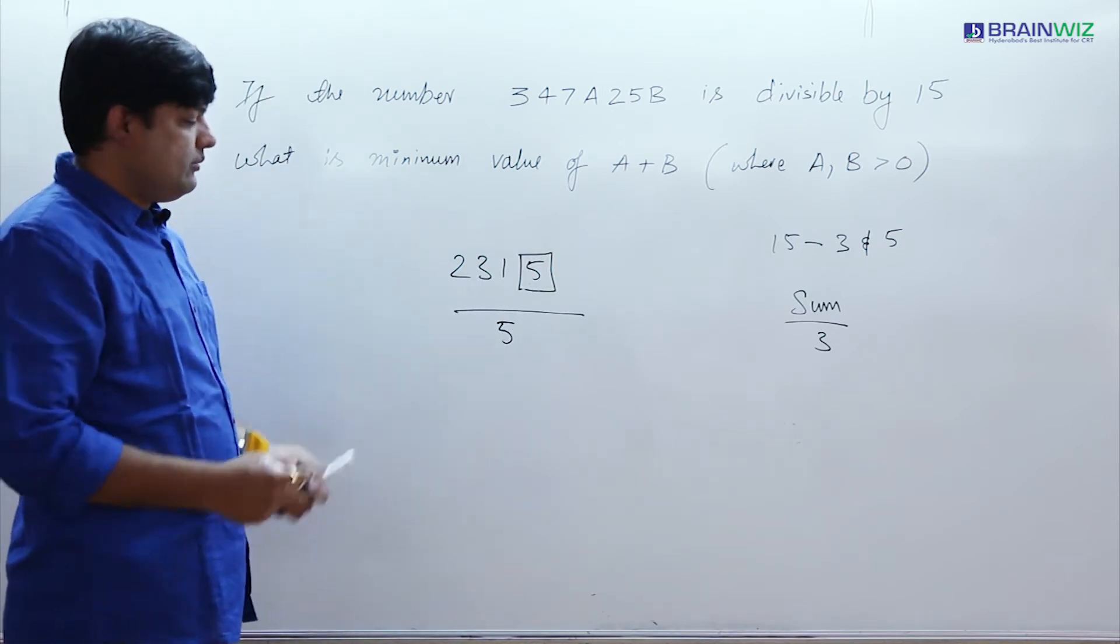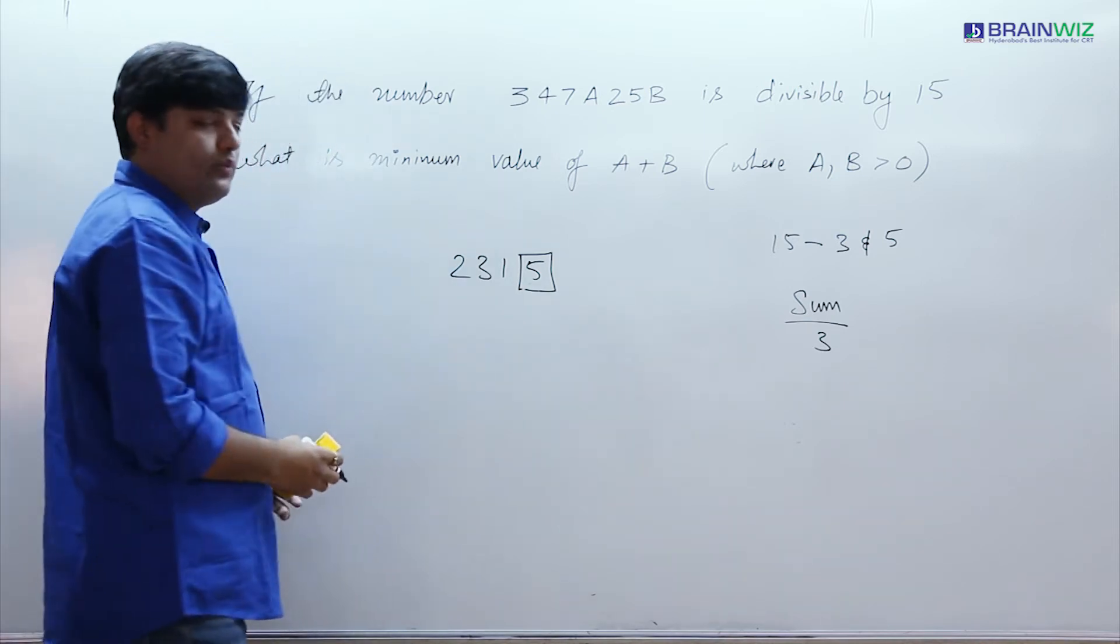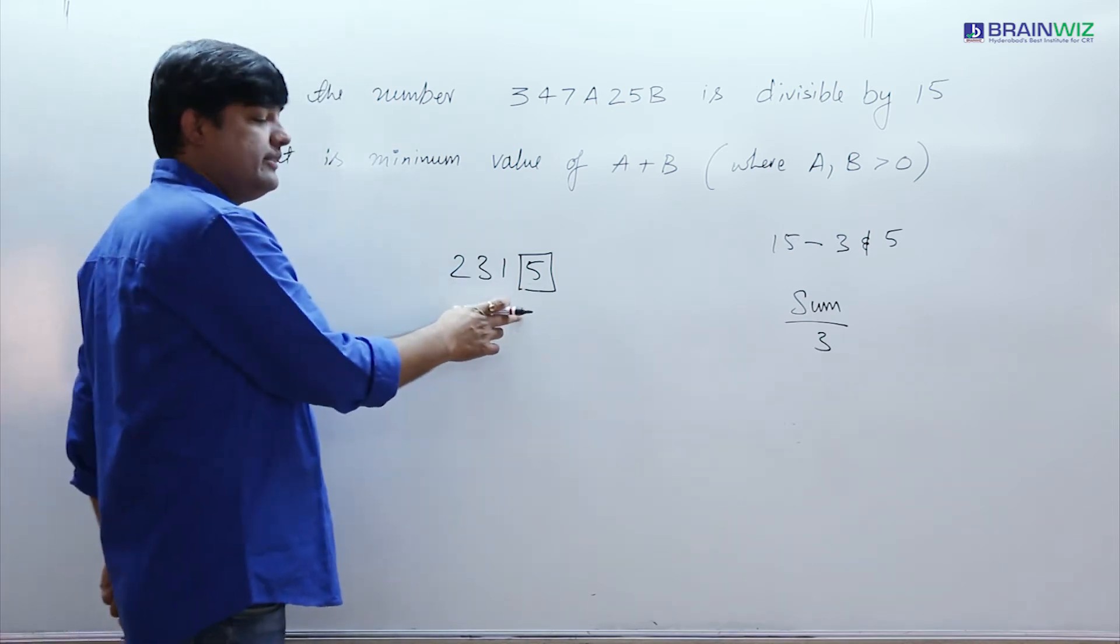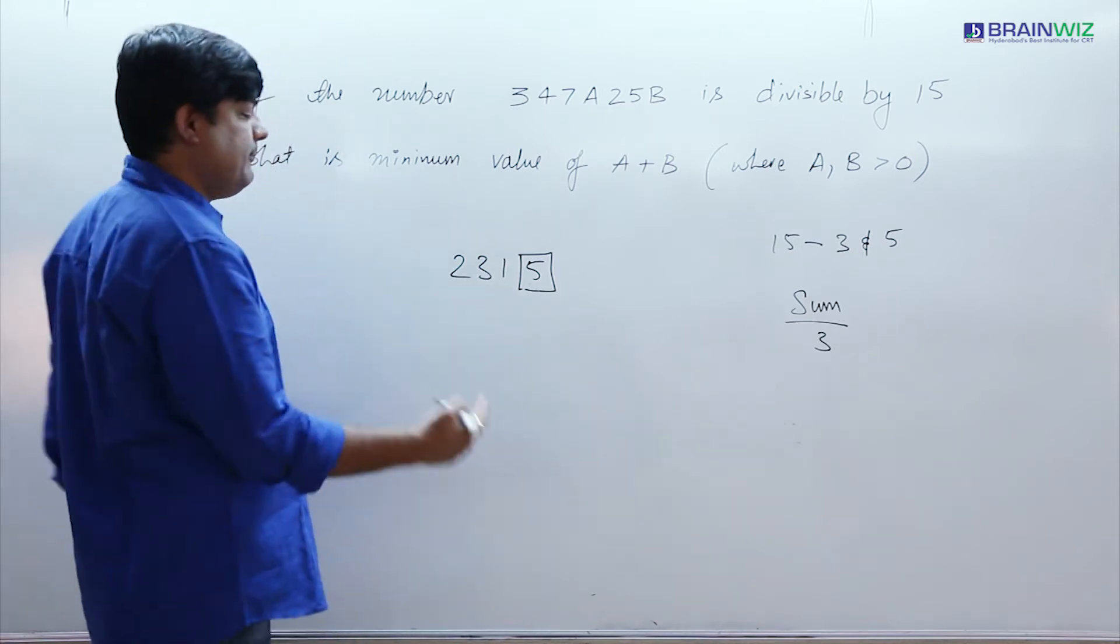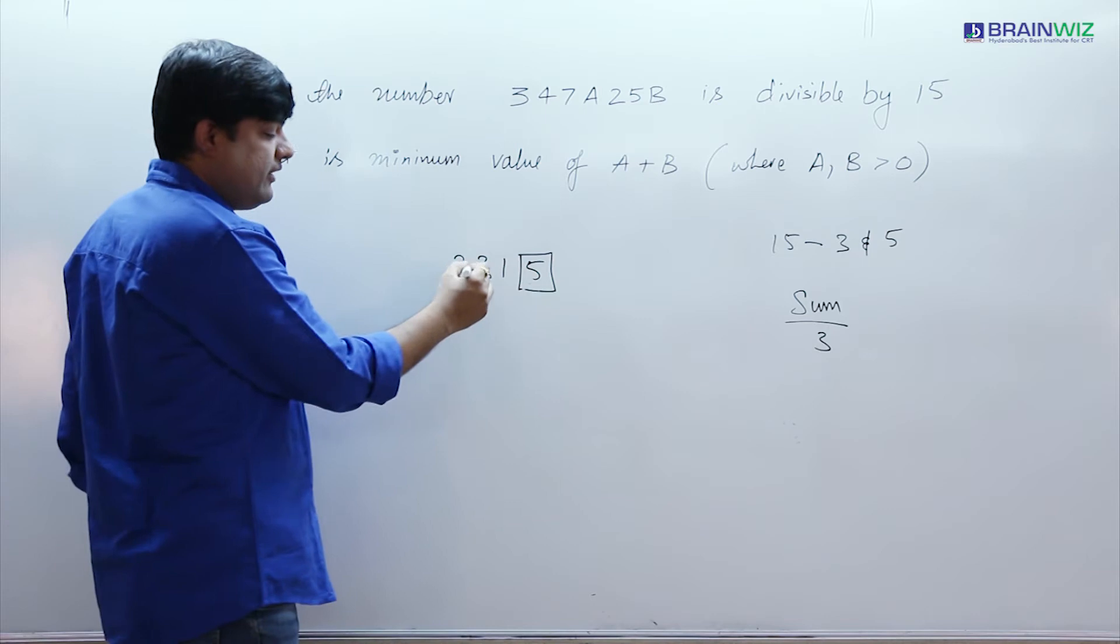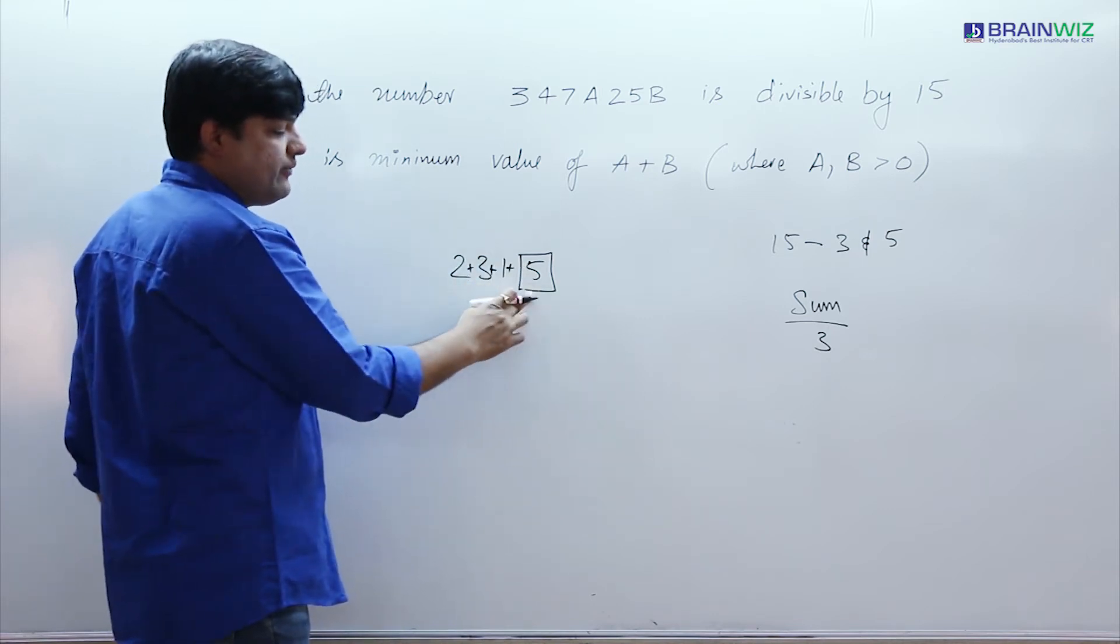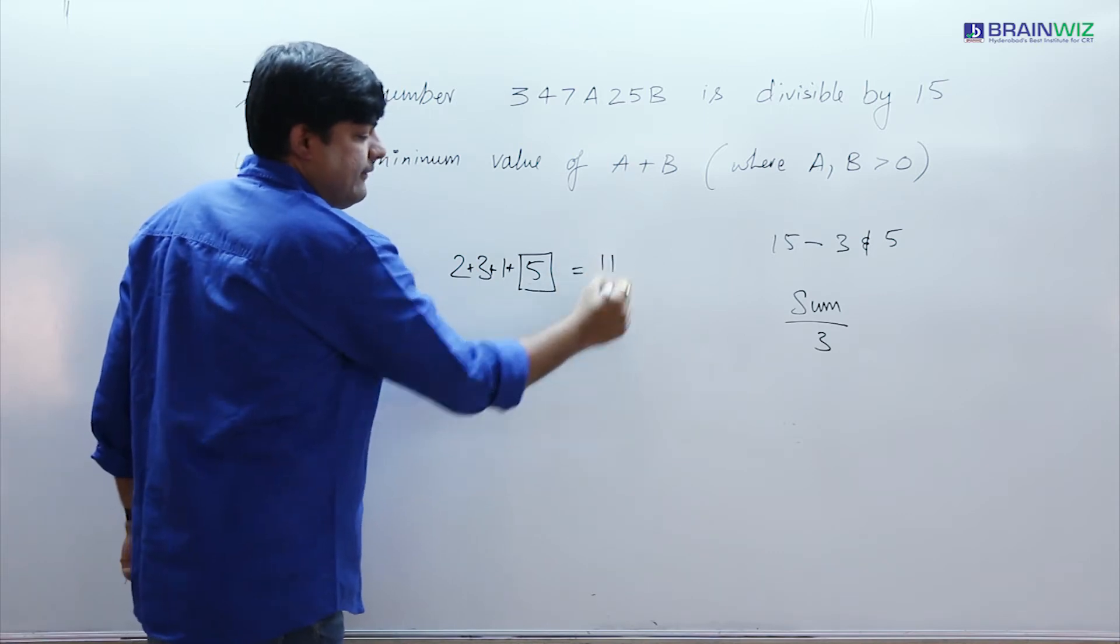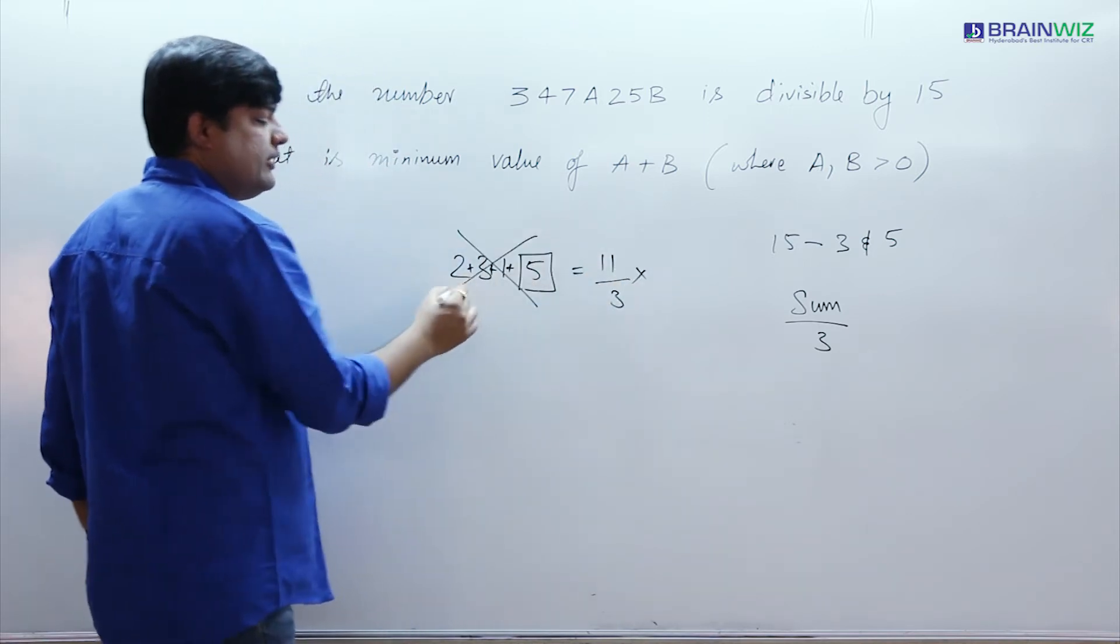So now the second condition is what is the condition that this number should be divisible by 3. In order to be divisible by 3, we have to see the sum. 2 plus 3 which is 5. 5 plus 1 that is 6. 6 plus 5 which is 11. 11 is not divisible by 3. Then this number is not divisible by 3.